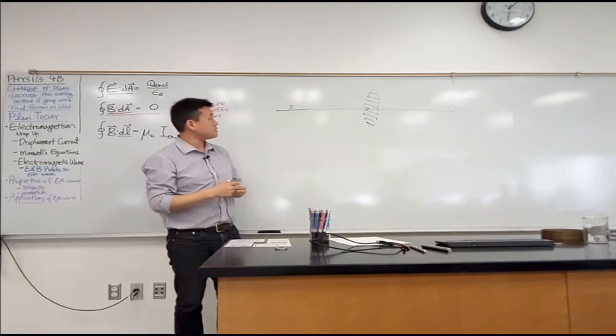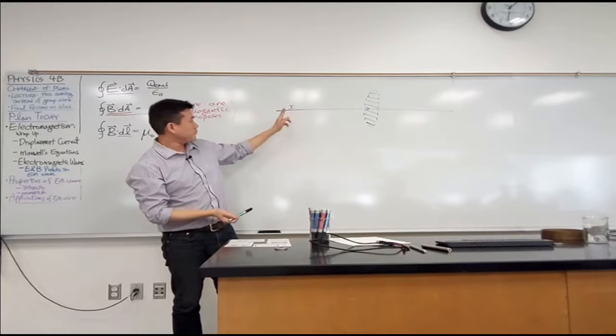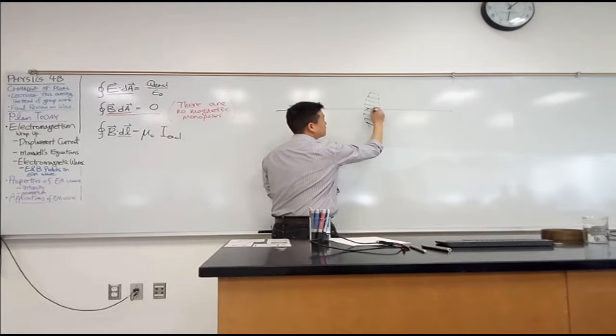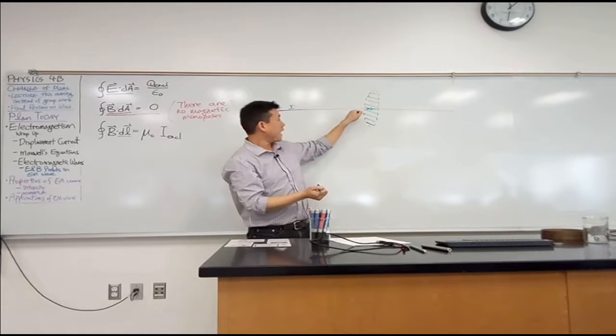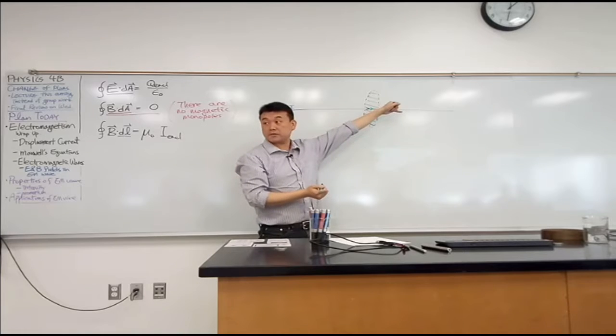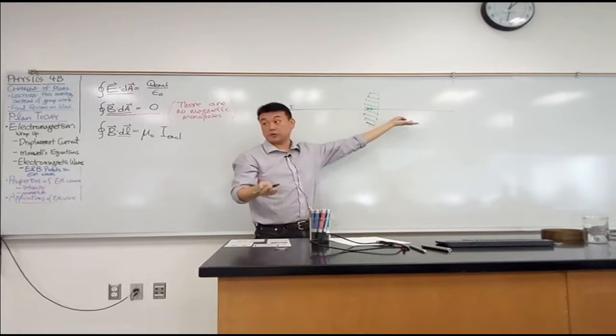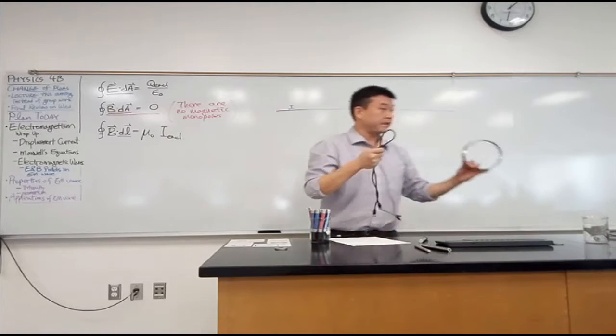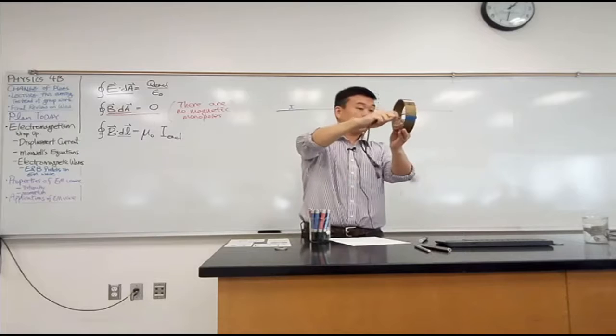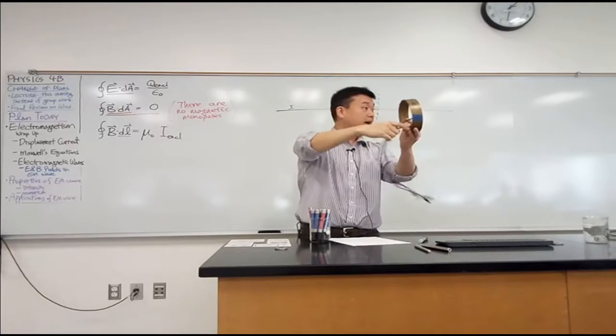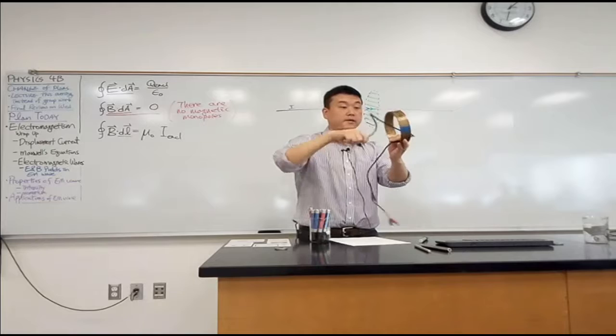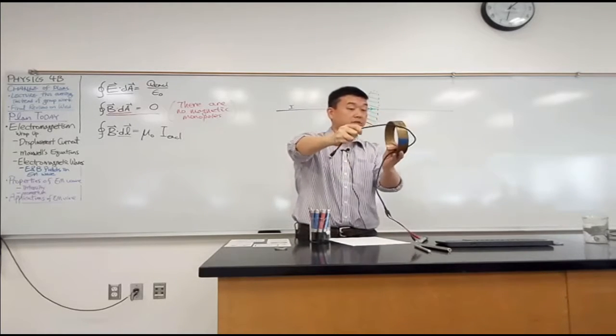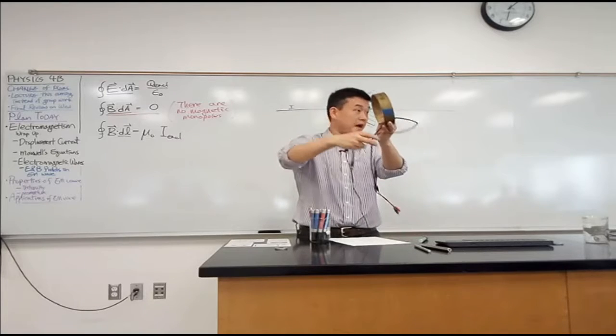And then what we can say is, well, what it means for the current to go through the loop is that it goes through this surface. So, each time the line pokes through the surface, we count it as being enclosed. So, you see that that rules out this as being enclosed in a net sense because it pokes through once and then it pokes back out the other way, so those two cancel out. Whereas this one, it pokes through one way, but as it comes around, it doesn't poke through again, so it counts only one way.